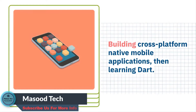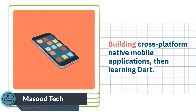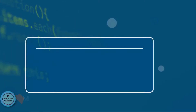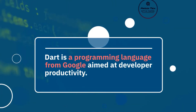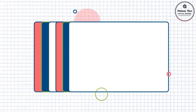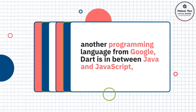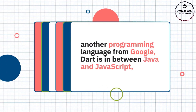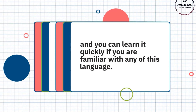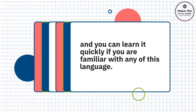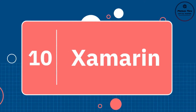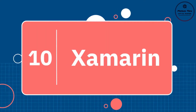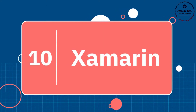Number nine: Dart. If you want to learn Flutter — which you should if you are serious about building cross-platform native mobile applications — then learning Dart could be beneficial, because Dart is the programming language that powers Flutter. Dart is a programming language from Google aimed at developer productivity. Unlike Golang, another programming language from Google, Dart is in between Java and JavaScript, and you can learn it quickly if you are already familiar with either of those languages.